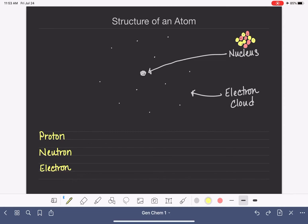Protons and electrons are charged particles. The proton has a charge of plus one. And the electron has a charge of minus one.